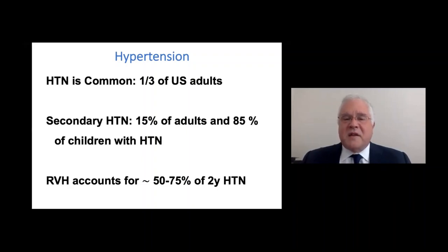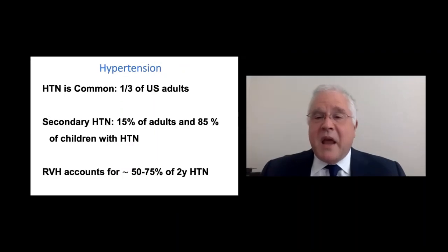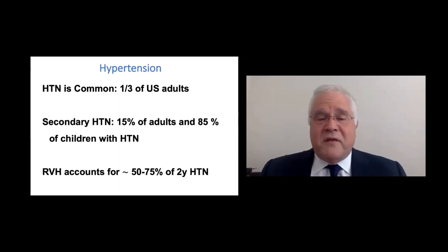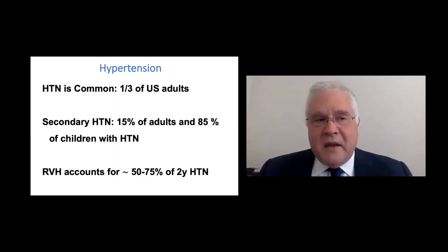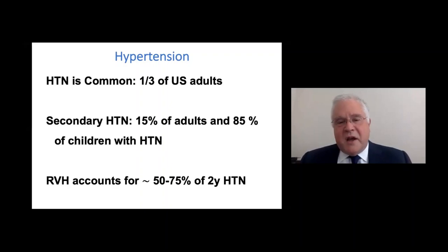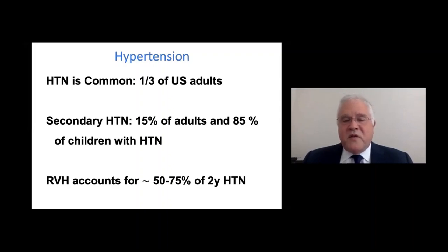Secondary hypertension affects about 15% of adults, but is a very common form in children — up to 85% of hypertension in children — likely because children haven't had enough longevity to develop essential hypertension yet, and most presentations involve anatomic or endocrine abnormalities. Renal vascular hypertension specifically accounts for an estimated 50% to 75% of all causes of secondary hypertension, so it's actually more common than we may appreciate.